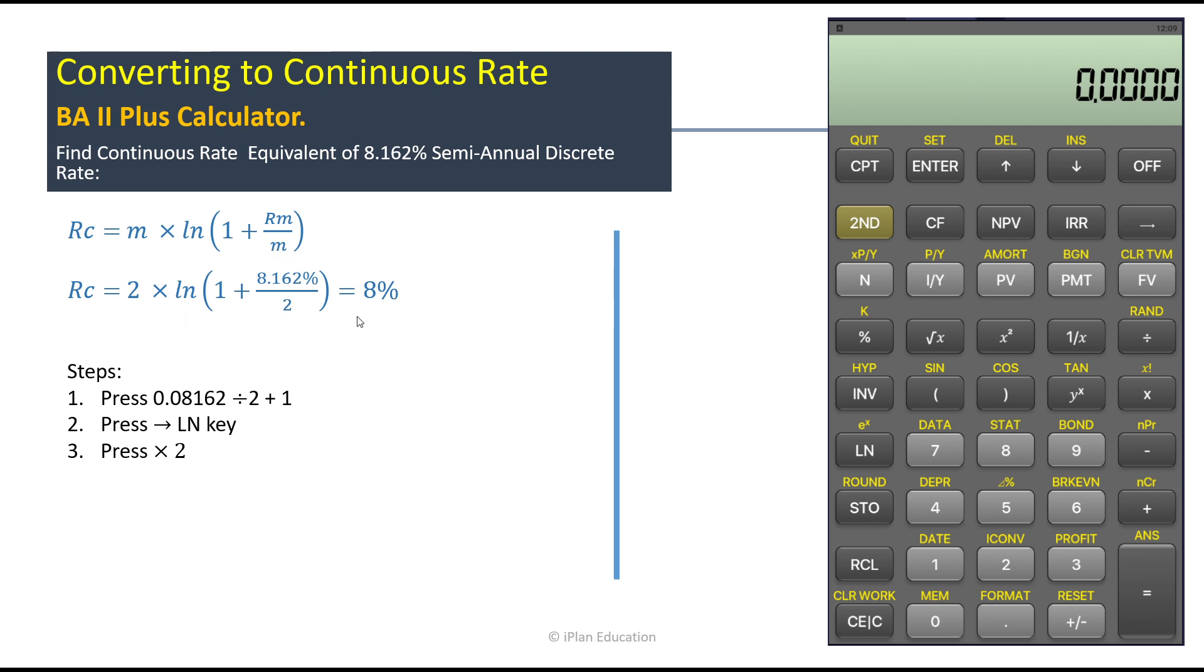So if you solve this thing you get 8%. However, how do we solve it using the financial calculator BA II Plus?